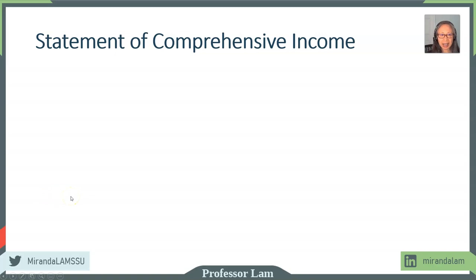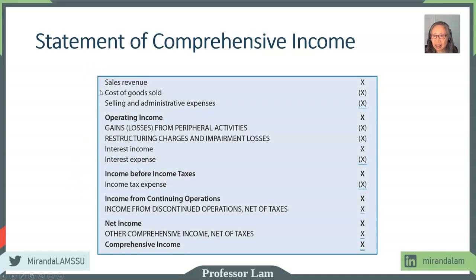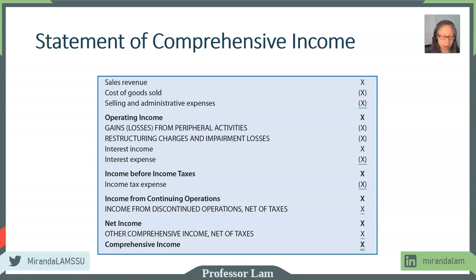Now let's take a look at income. We had talked about earnings management. Typically, we have sales minus cost of goods sold and selling and administrative expenses, which brings us to operating income. An important part of understanding earnings quality is separating operating versus financing versus investing activities.